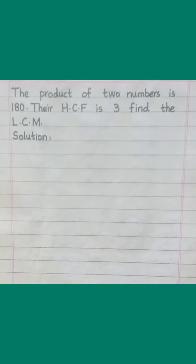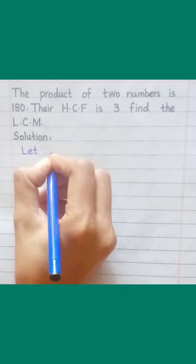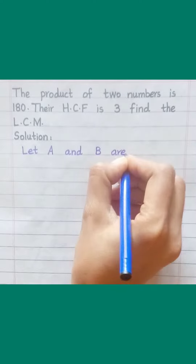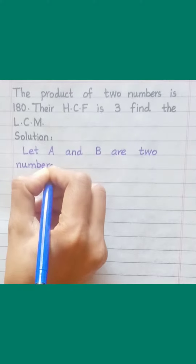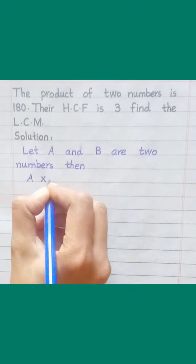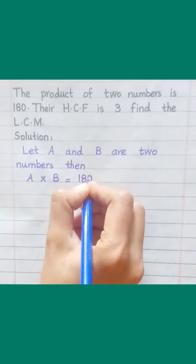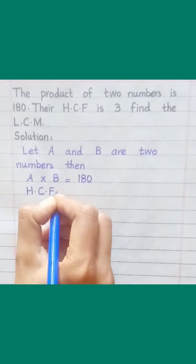The product of two numbers is 180. Their HCF is 3. Find the LCM. Solution. Let A and B be two numbers. Then A multiplied by B equals 180, and HCF equals 3.